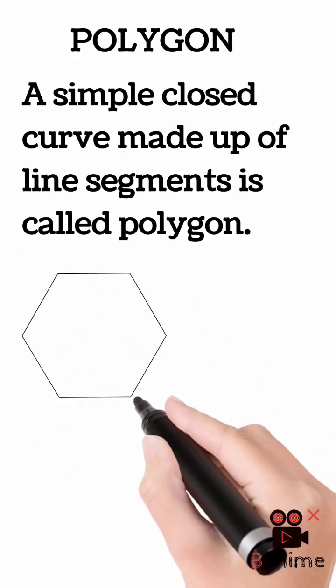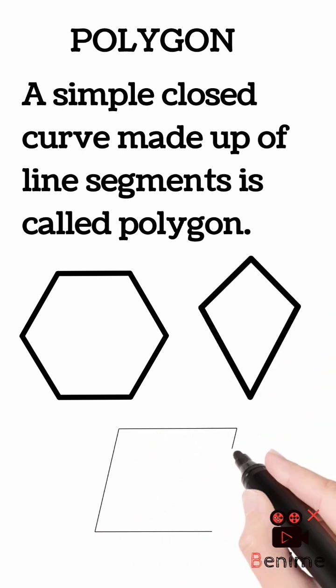Polygon: A simple closed curve made up of line segments is called a polygon.